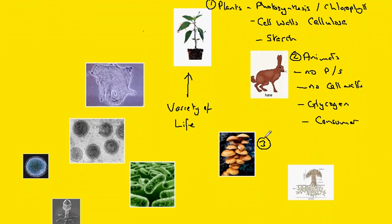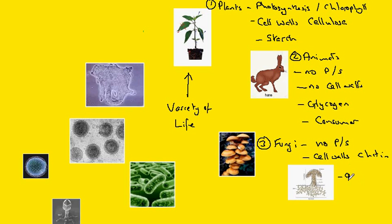Our third group is the fungi. Once more, no photosynthesis. However, we do have cell walls, but this time they are composed of a different molecule called chitin. These organisms store glycogen like animal cells, but their mode of nutrition is as saprophytes. They usually secrete enzymes and digest the substrate — their food — outside of the body and then absorb it.